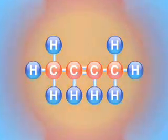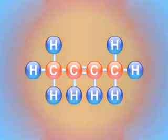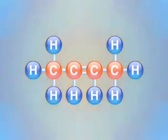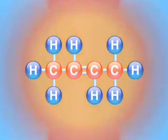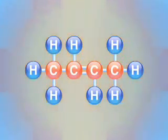If you take an unsaturated fat with a double bond, heat it, and add hydrogen, you can change the position of the hydrogen atoms at the double bond. Usually, they're both on one side of the chain. But the chemical reaction causes one hydrogen to cross over to the other side of the chain, so that the hydrogen atoms now sit across from each other. We call this a trans fat because trans means across.